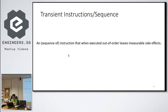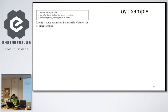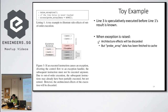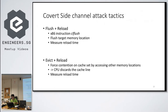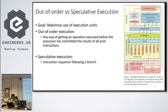There's a concept called transient instructions — defined as any sequence of instructions that, when executed out of order, leave a measurable side effect. In the toy example, line 3 is speculatively executed before line 1's result is known. Normally you finish line 1 first, but because of out-of-order execution this is not the case. When the exception is raised, the architectural effects are discarded, but because out-of-order execution has already run, the memory has already been loaded.